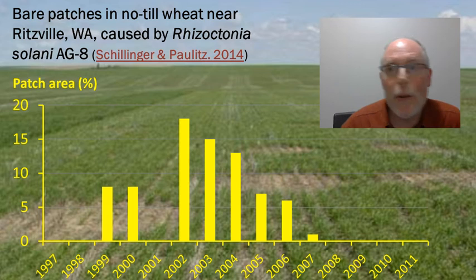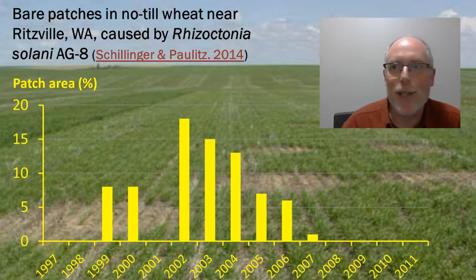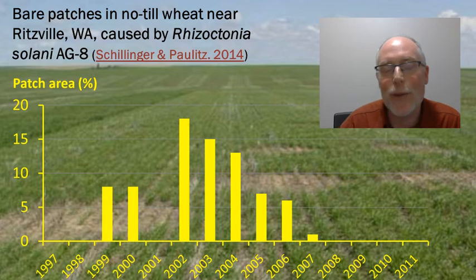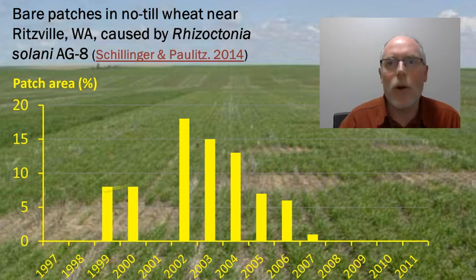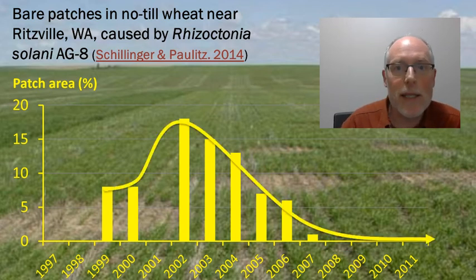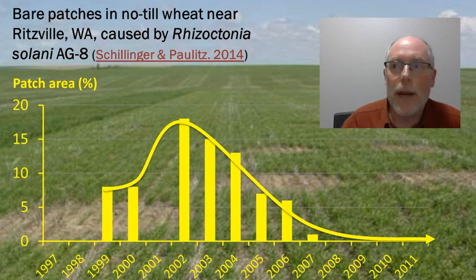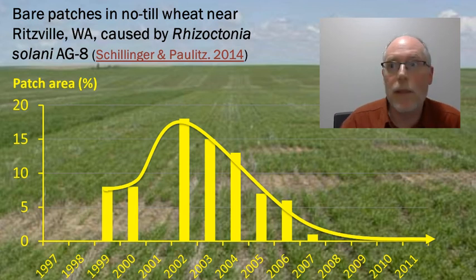This example comes from a report by Chillinger and Pollitz, who are scientists at Washington State University and at the USDA's Agricultural Research Station in Pullman, Washington. The pattern that they describe, where a disease outbreak is followed by disease suppression mitigated by beneficial soil microbes, has been observed for many different crop diseases in many different soils.